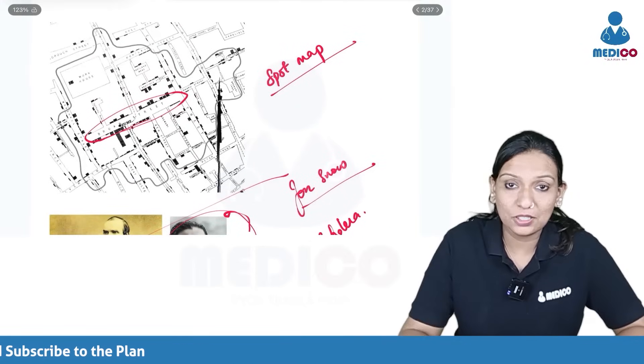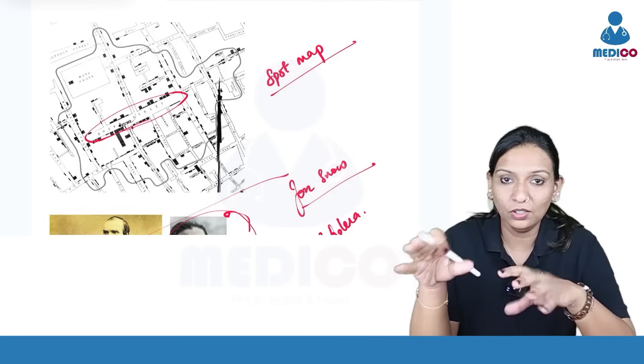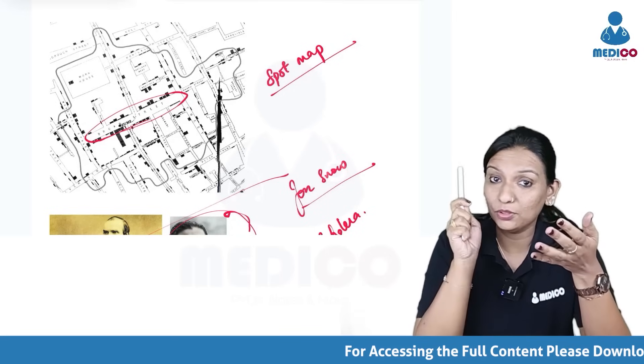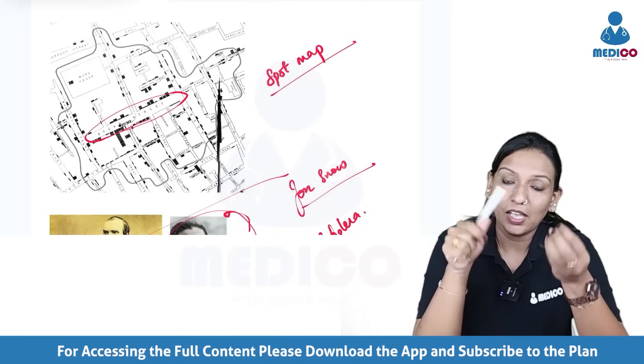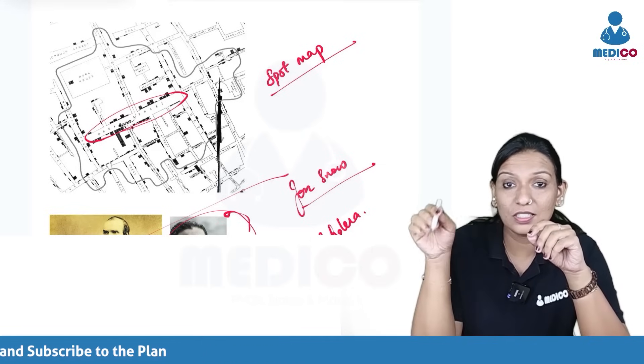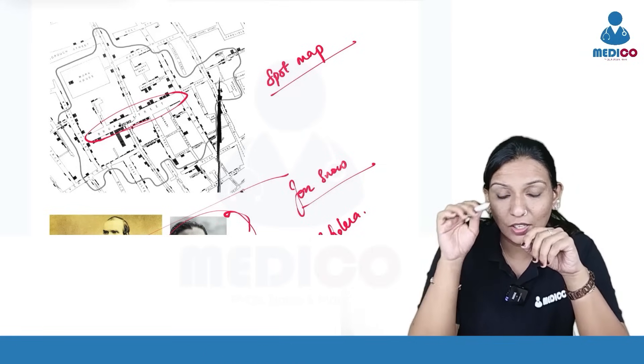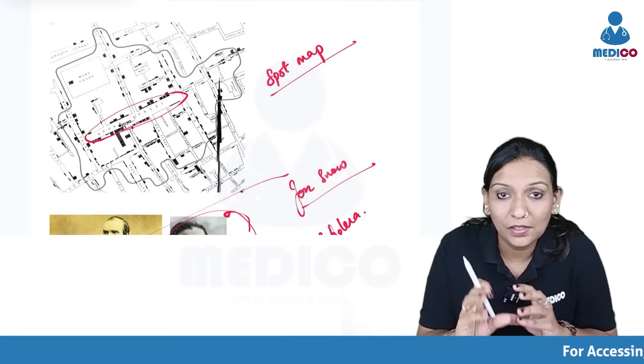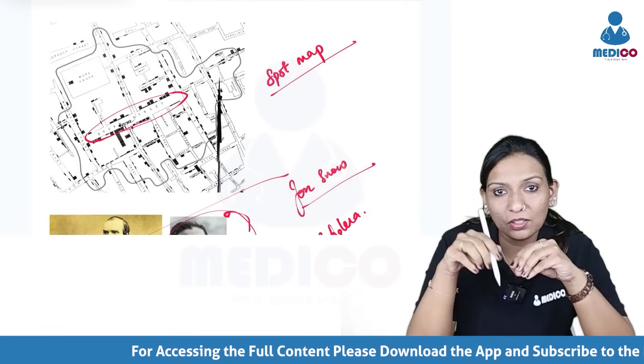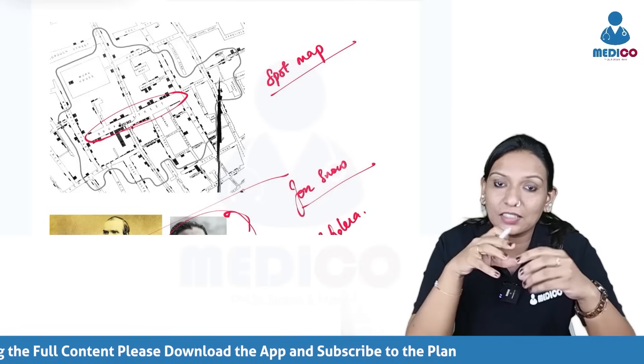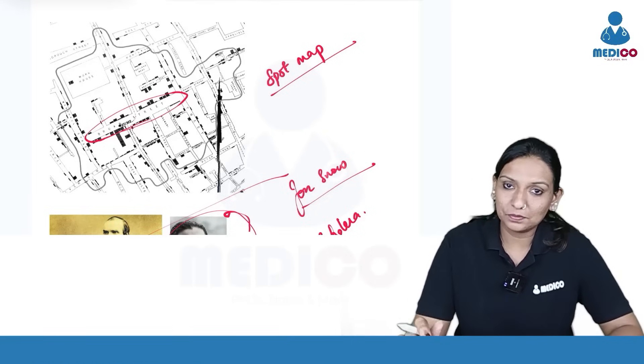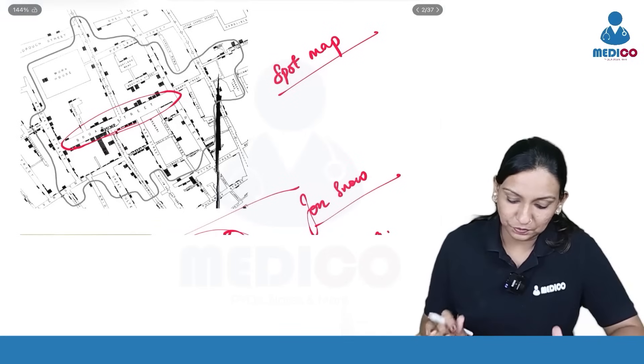So Jon Snow and Cholera. Spot map was devised by Jon Snow. Long story short, there was a cholera outbreak in London. At that time, we did not know about cholera disease or the agent that is Vibrio cholerae. But what Jon Snow did was he plotted or marked the houses where the cases of this watery diarrhea was present. And he saw that all these cases were clustered around the pump, which is the Broad Street Pump.